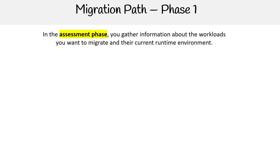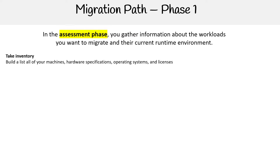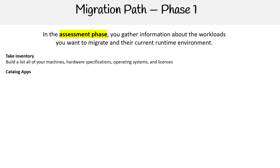Phase one is the assessment phase. You gather information about the workloads you want to migrate and their current runtime environment. You're going to take an inventory — build a list of your machines, hardware specifications, operating systems and licenses. You'll also catalog apps: build a catalog matrix to help you organize apps into categories based on the complexity and risk in moving to Google Cloud.